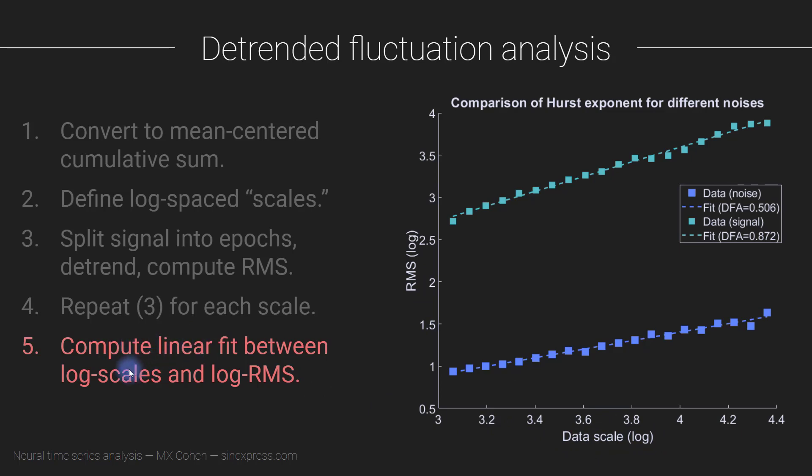And then you just compute the linear fit between these. And what you will always find is that this relationship is positive, and it's generally linear in this log log scale, which means it's actually a log relationship, but we look for a linear fit. And the theoretical value of the DFA for pure white noise is 0.5. So you can see this is empirical noise. I simulated random numbers, and then I got an empirical DFA of 0.506, so it's really, really close to the theoretical value of 0.5.